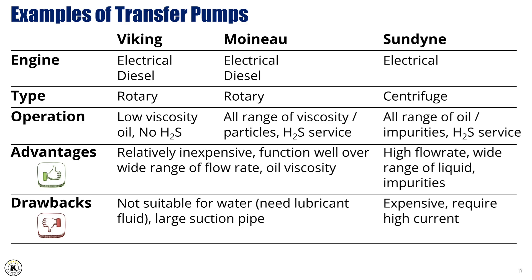3. Sundine Pump — uses a centrifugal mechanism and is powered by an electric motor. It can handle a wide variety of liquids, including those with particles, and is safe for H2S environments. It stands out for its ability to manage high flow rates and work with many different fluid types and impurities. The downside is that it's on the pricier side and requires a high electric current to operate.